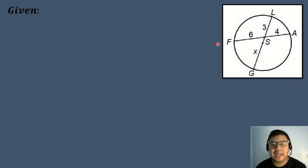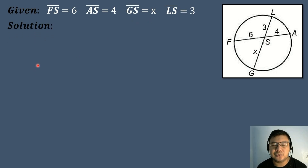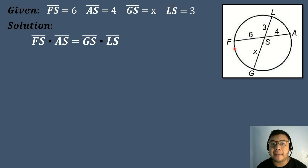Let's have an example. We have a given circle where the measure of segment FS is equal to 6, segment AS is equal to 4, segment GS is equal to X (unknown), and segment LS is equal to 3. We need to find the measure of segment GS. We have two chords: chord FA and chord LG. The formula is: segment FS times segment AS equals segment GS times segment LS.